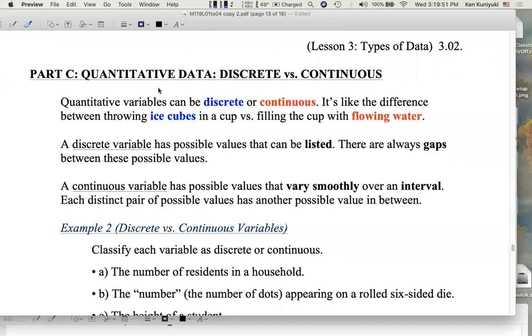Hi, everyone. There are two different types of quantitative data: discrete data versus continuous data.